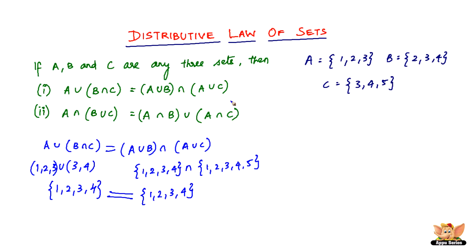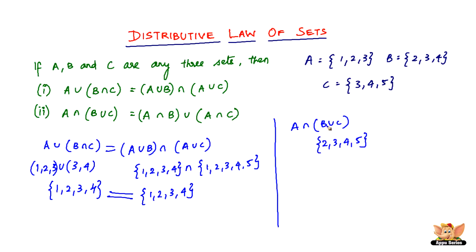Similarly, let us check for the intersection operation on sets. We have A intersection of B union C. B union C will be {2, 3, 4, 5}, and A is {1, 2, 3}. So the intersection of these two sets will be just {2, 3}. Therefore, A intersection of B union C equals {2, 3}.